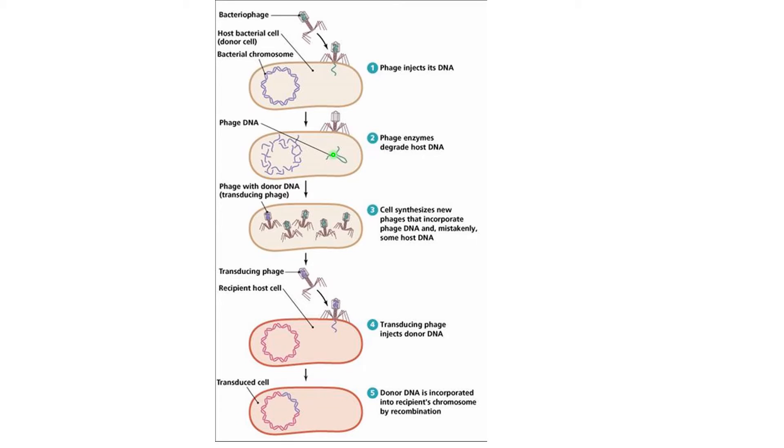To make sure that happens, in step two, an enzyme is released and the donor bacterium's chromosome is broken apart into pieces. That way, the donor bacterium's DNA can't be transcribed or translated.